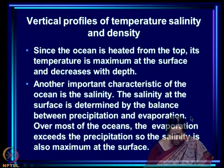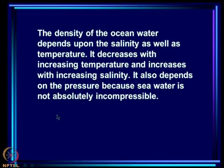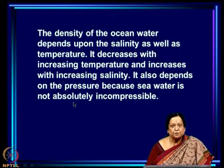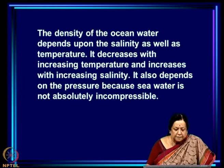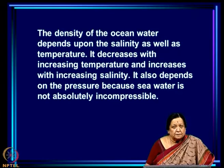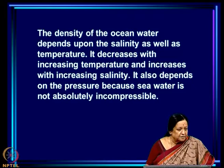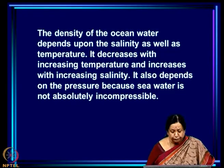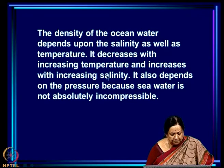Over most of the oceans, evaporation exceeds precipitation, so salinity tends to be maximum near the surface of the ocean and decreases as you go down. The density of ocean water depends upon salinity as well as temperature. Density decreases with increasing temperature — warmer water has lower density — but increases with increasing salinity. Near the surface, you have warm water which is highly saline, and depending on the contribution of temperature and salinity, you could have an increase or decrease of density with depth.